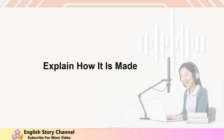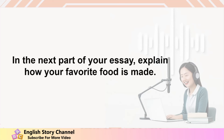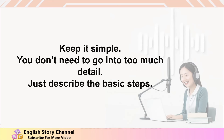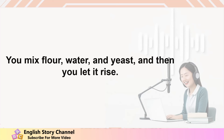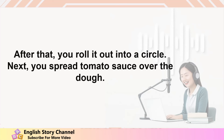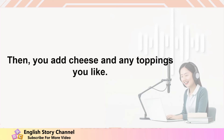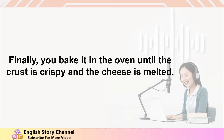Explain how it is made. In the next part of your essay, explain how your favorite food is made. Keep it simple — you don't need to go into too much detail, just describe the basic steps. Example: Making pizza is not very hard. First, you need to make the dough — you mix flour, water, and yeast, then let it rise. After that, you roll it out into a circle. Next, you spread tomato sauce over the dough. Then you add cheese and any toppings you like. Finally, you bake it in the oven until the crust is crispy and the cheese is melted.